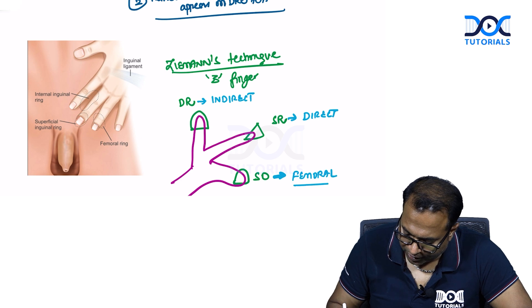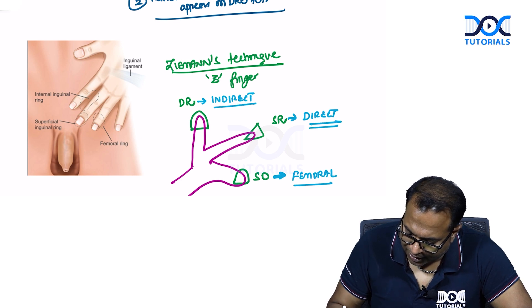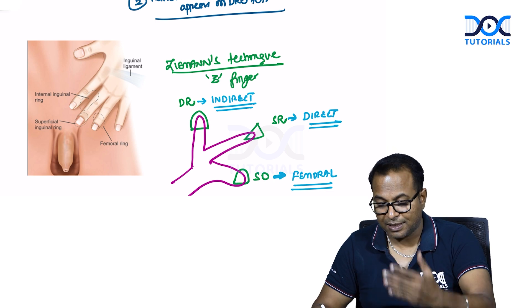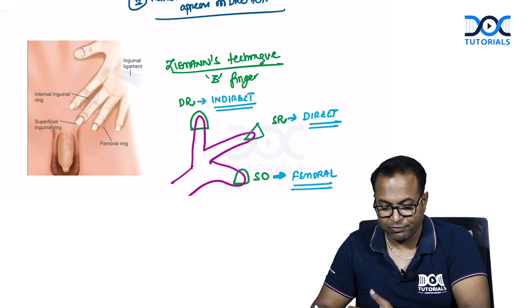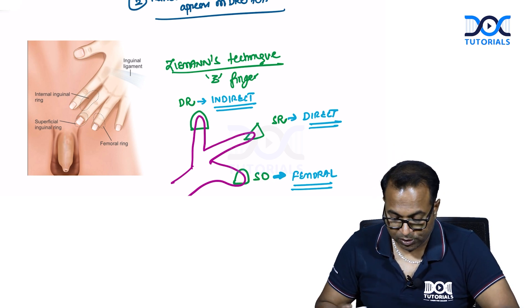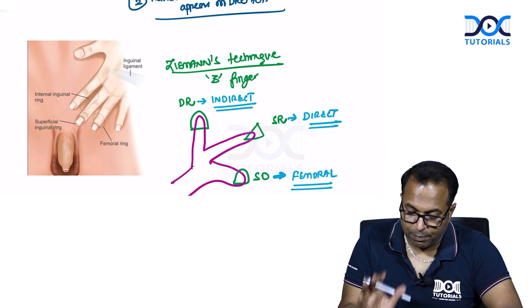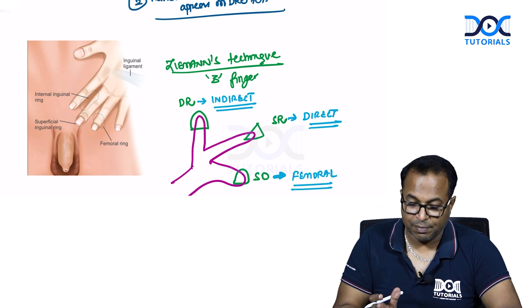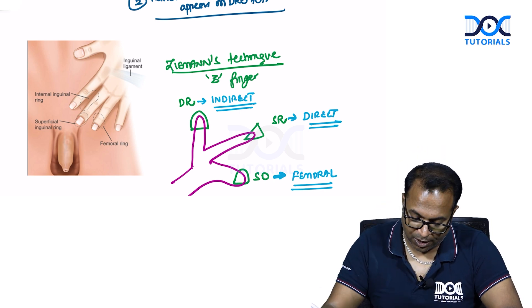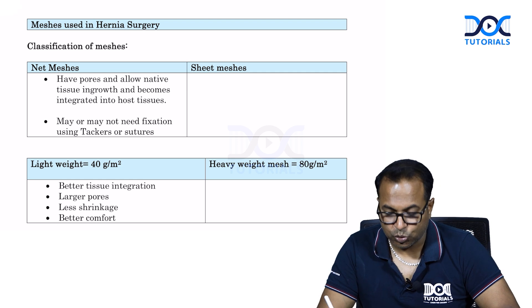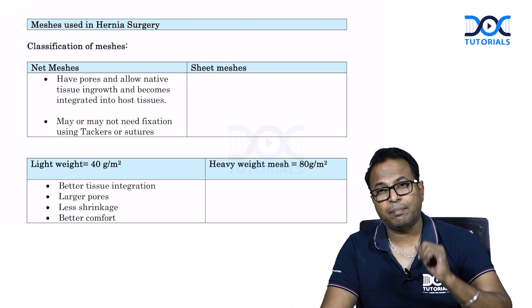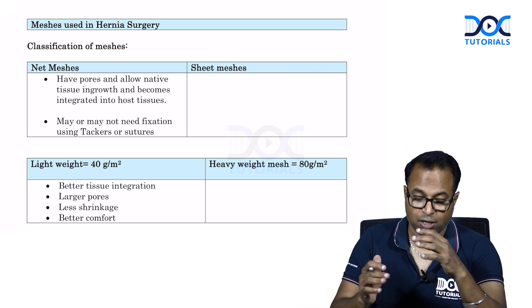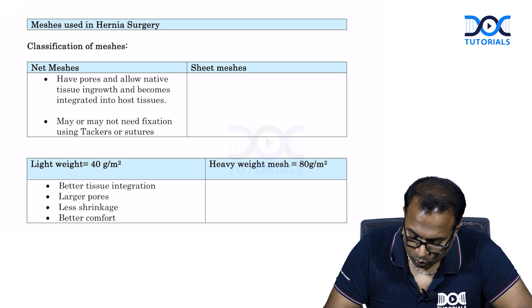Don't forget these three hernias — indirect, direct, and femoral — according to the impulse location. These are the three basic clinical tests used in hernias: deep ring occlusion test, finger invagination test, and Zeeman's technique. Another basic concept you should not forget is the meshes used in hernia repair.